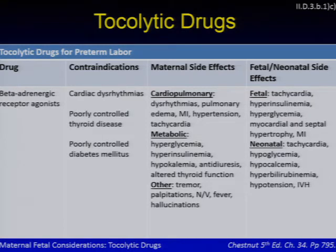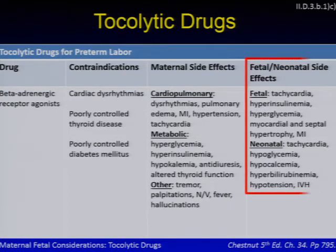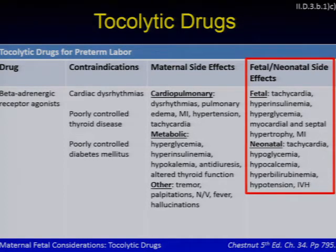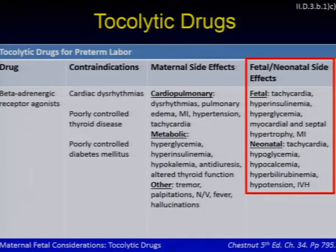You can pause here to review the contraindications and maternal and fetal/neonatal side effects of beta-adrenergic agonists. Giving terbutaline or other beta-agonists to the mother can cause fetal tachycardia, hyperglycemia, myocardial and septal hypertrophy, or even MI. As the fetus transitions to the neonatal period, it can remain tachycardic and then become hypoglycemic, hypocalcemic, hyperbilirubinemic, and hypotensive; rarely, intraventricular hemorrhage can occur.